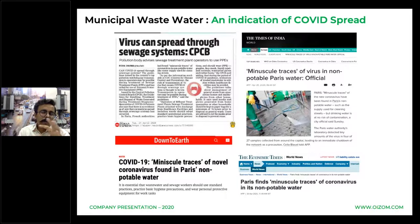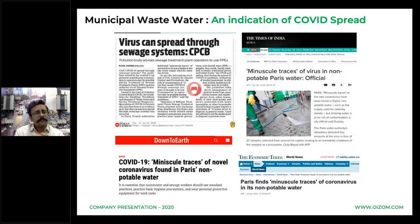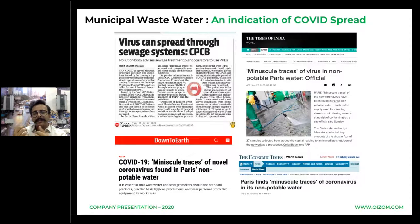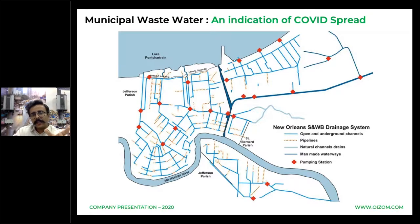Let's also focus on how water systems are being affected. The CPCB — the governing body in India — has cautioned operation and maintenance workers in sewage treatment plants about traces found in sewage systems. Minuscule traces were also found in non-potable water bodies in Paris. Municipal wastewater can be an indication of COVID spread, and finding traces of the virus in the sewer system can help identify asymptomatic patients in a region, increasing testing frequency based on identified hotspots.